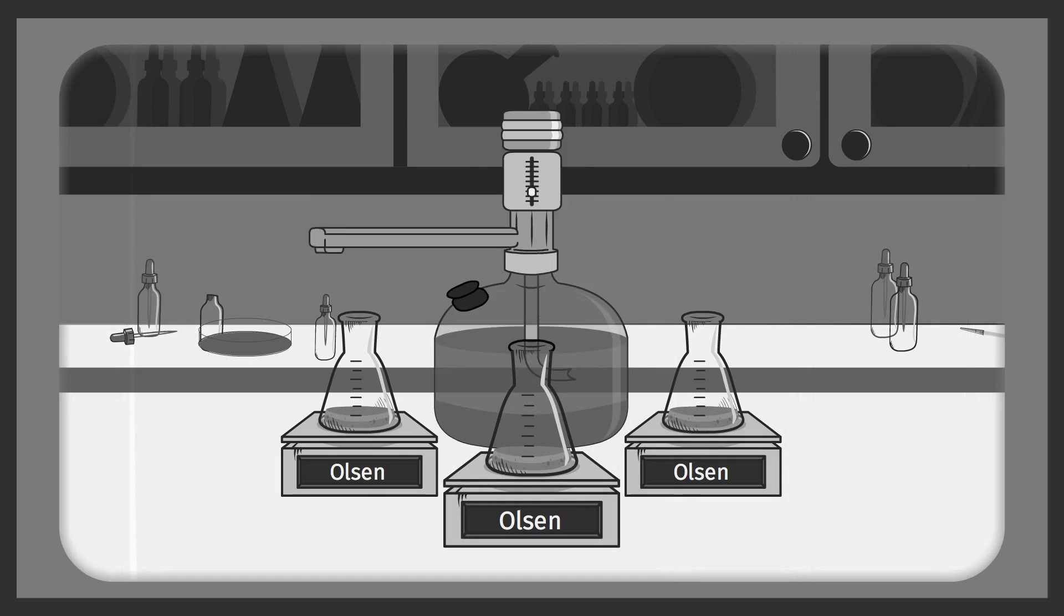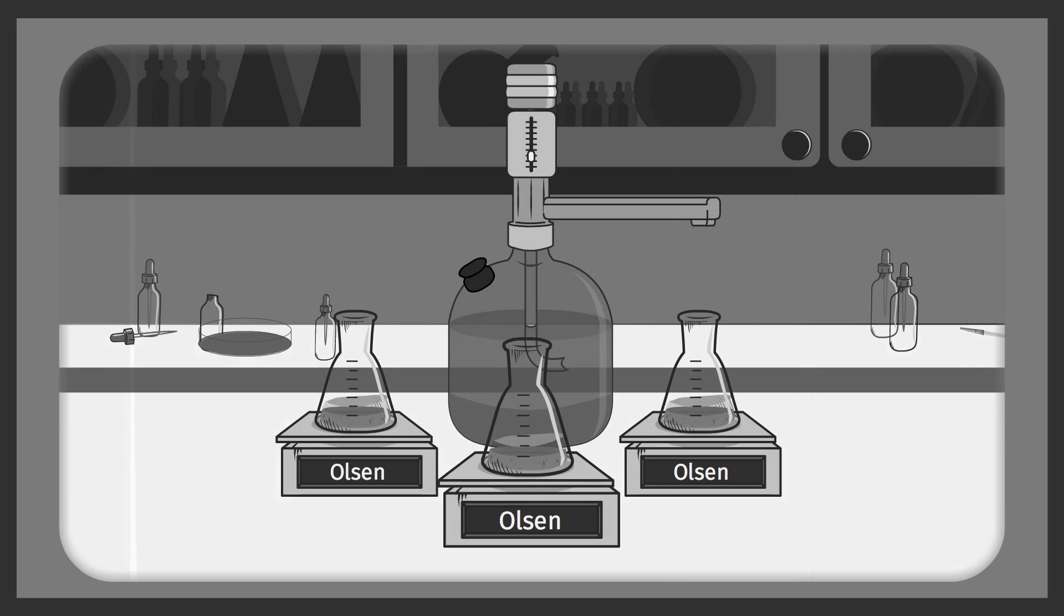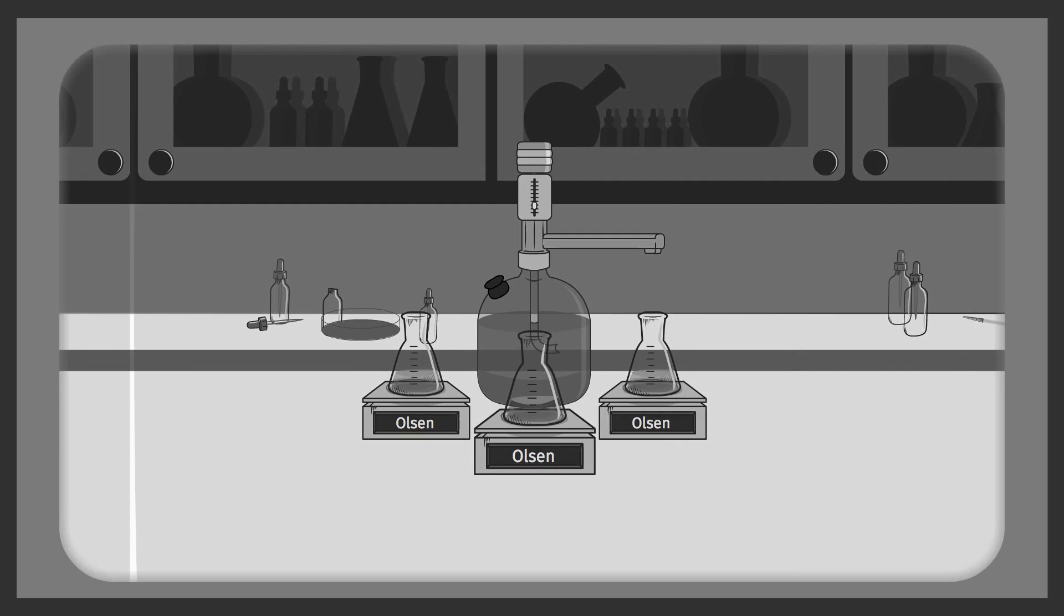In the test lab, soil is mixed with an extracting solution that simulates roots extracting phosphorus from the soil matrix. The composition of the extractant should represent the chemistry of the soil being tested.